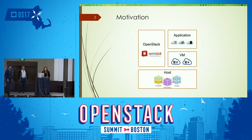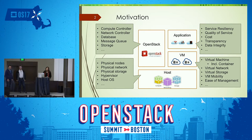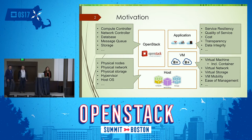Now we can start. High availability is a very complicated problem to resolve. By this graph, we show four types of high availability in OpenStack deployment cloud. In an OpenStack cloud, OpenStack is supposed to manage a group of hosts, and on those hosts, OpenStack can create and manage the lifecycle of VMs and containers. Inside those containers and VMs, applications are running. The four types of availability can involve different kinds of factors.